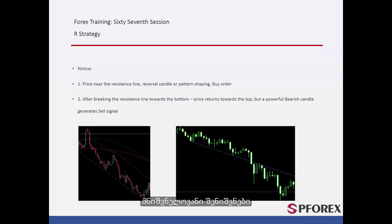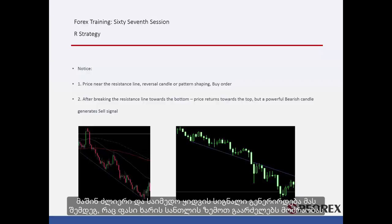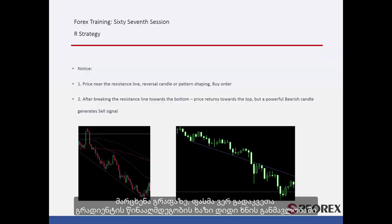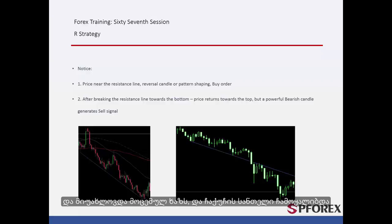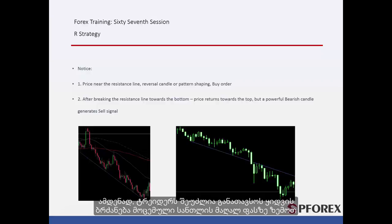Significant Notifications: When price declines towards the resistance line without crossing anything, if a powerful bullish candle forms near the resistance line, then a powerful and reliable buy signal is generated after price goes higher than that bullish candle. On the left graph, price could not cross the resistance line for a long time, and after it fell near this line, a bullish hammer candle formed. Thus, a trader could place a buy order above the high price of the given candle.